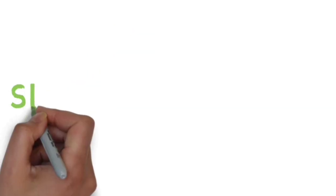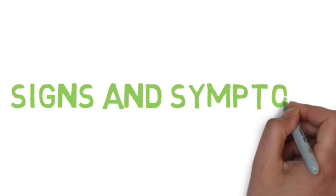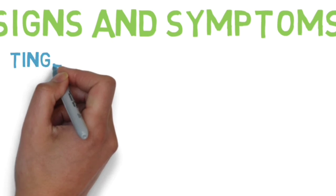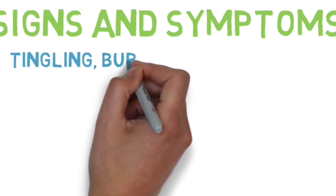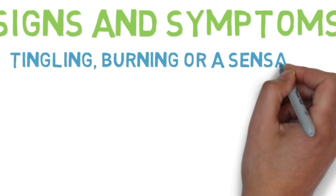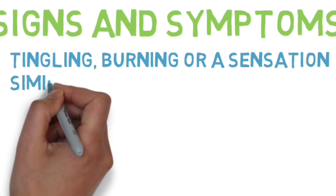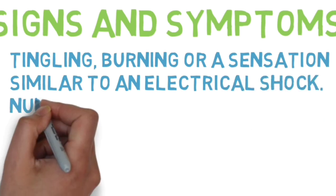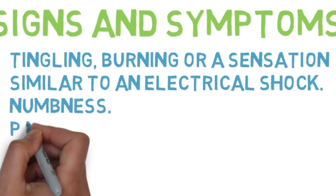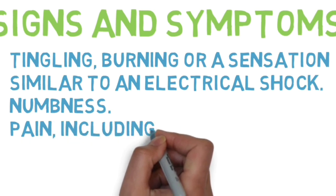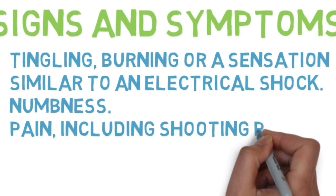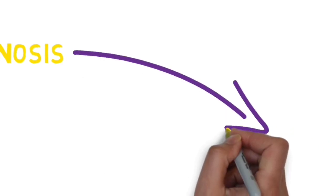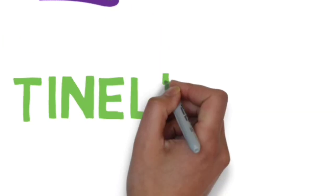A patient with tarsal tunnel syndrome may complain of tingling and burning pain, electric shock-like sensations, pain and numbness in the inside part of the ankle, sometimes isolated pain which may extend towards the toes and even the calf region.